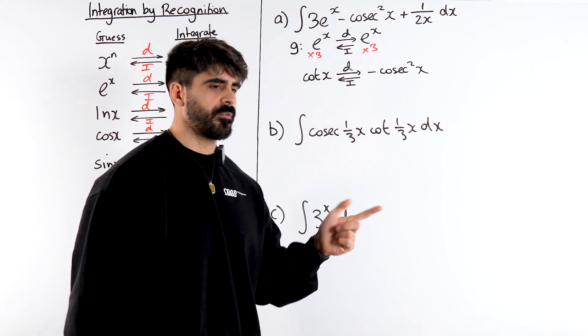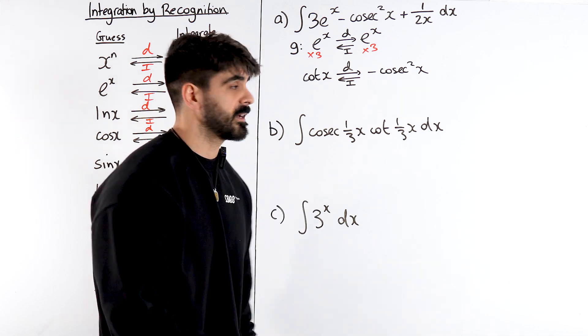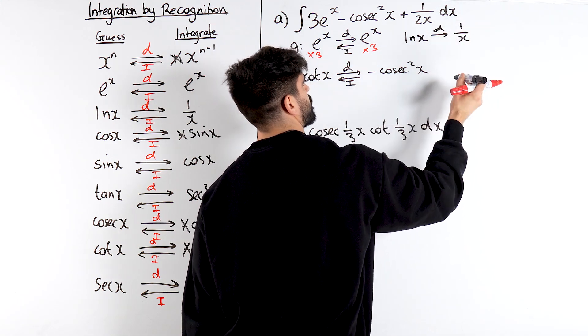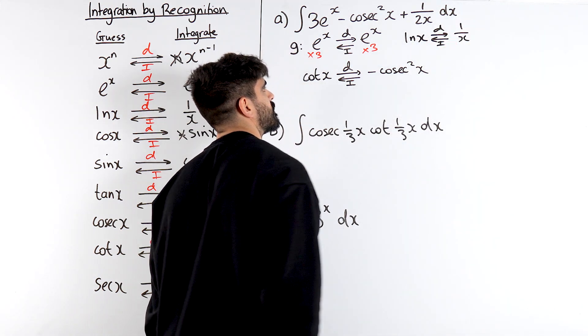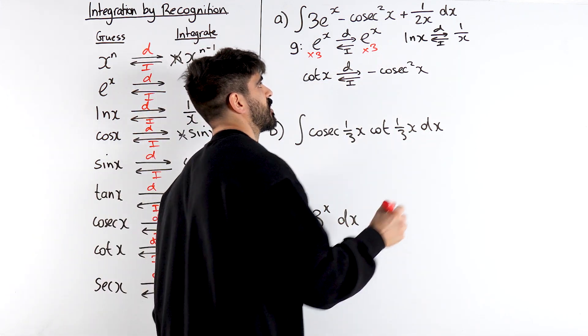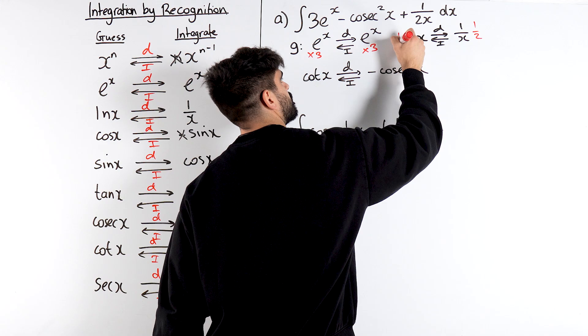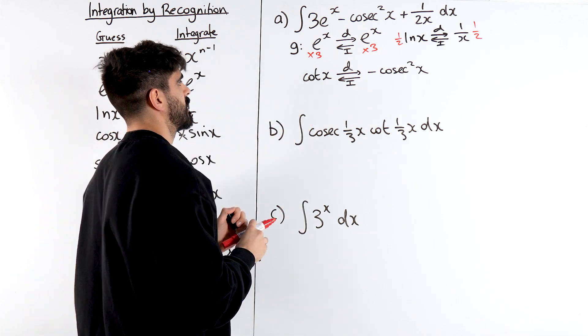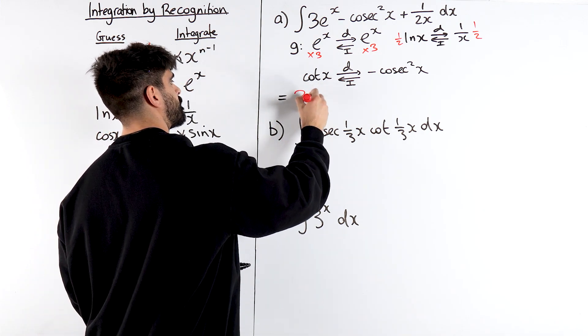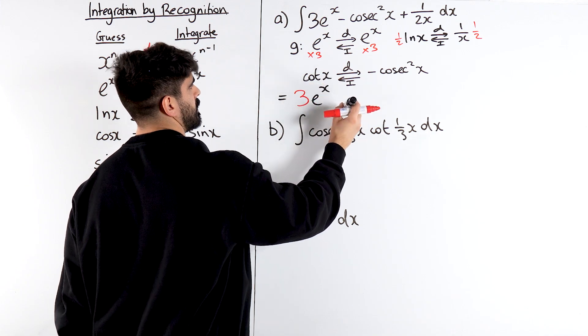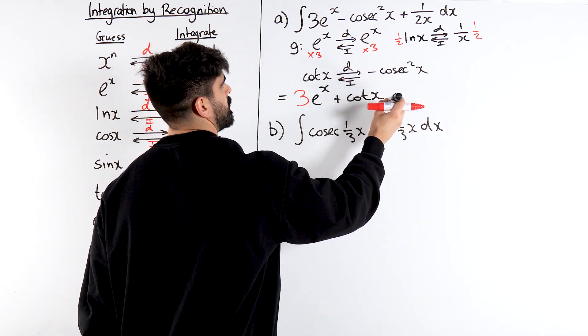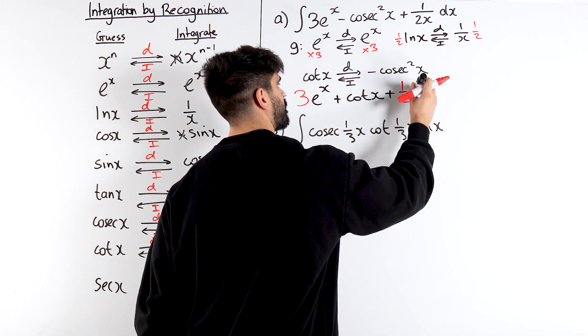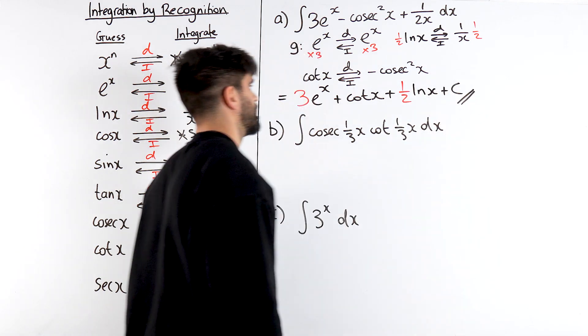Finally we've got the 1 over 2x. It's a fraction. I know ln x differentiates to fractions so my guess is going to be ln x. But ln x differentiates to 1 over x. So 1 over x integrates back to ln x. But I wanted 1 over 2x. That just means I need to half both sides. That gives me 1 over 2x. And there's your answer. So my answer is 3 e to the x plus cot x plus 1 half ln x. Don't forget your plus c mate. It's as simple as that.